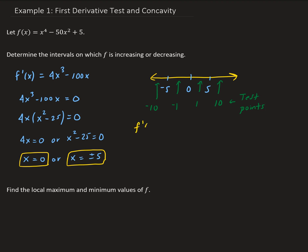So f prime of negative 10 gives us 4 times (negative 10) cubed minus 100 times (negative 10), which equals negative 3,000. That is less than zero, which means the function is decreasing on the interval from negative infinity to negative 5.